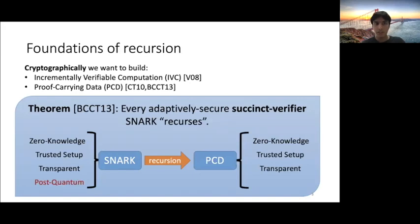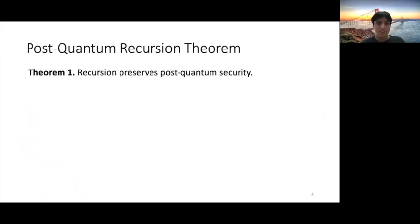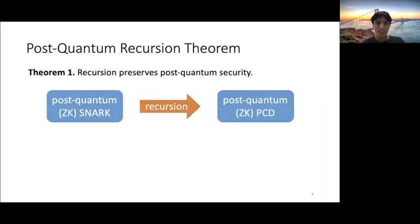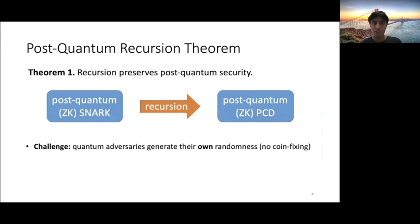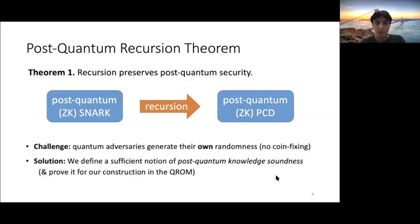But what about post-quantum? So PCCT13 says nothing about this. So we answer that, yes, if you have a post-quantum SNARK and you recurse it, you will get post-quantum PCD. This is not a straightforward generalization of PCCT13. One of the problems is that quantum adversaries can generate their own randomness. So previously, you would assume that your adversary is deterministic because if you had a probabilistic one, you could just fix its randomness and get a deterministic adversary. Whereas here, we have to fix that because in the quantum setting, that's not true. Adversaries can always generate their own randomness. So the solution is to define a sufficient notion of post-quantum knowledge soundness and then prove it secure for our construction in the quantum random oracle model.